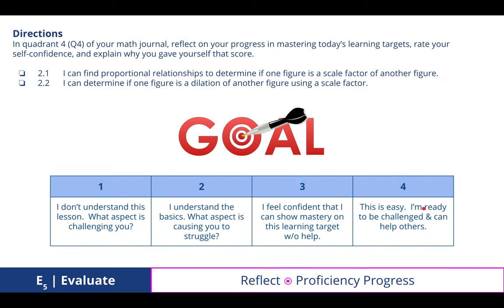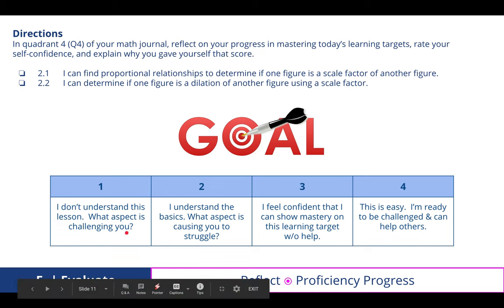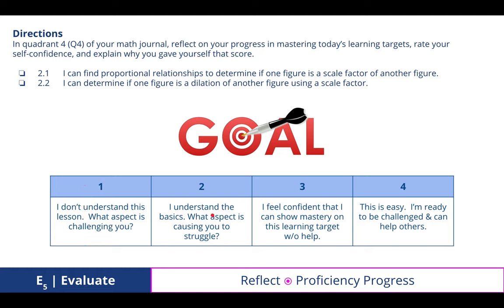In quadrant four of your math journal, reflect on your progress in mastering today's learning targets, rate your self-confidence, and explain why you gave yourself that score. Hopefully we're not at a level one. This presentation and engaging in the process got us to a level two. Now going back and experimenting, learning by doing with the applets and Khan Academy, and reviewing your notes will help us get to level three.